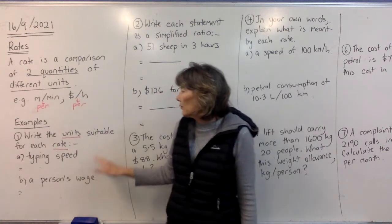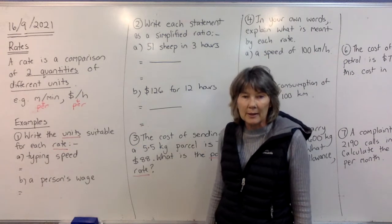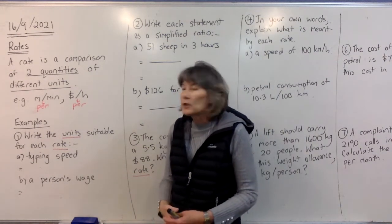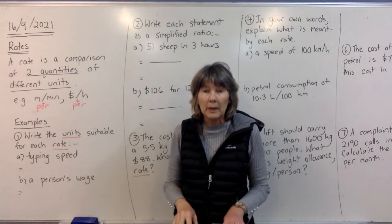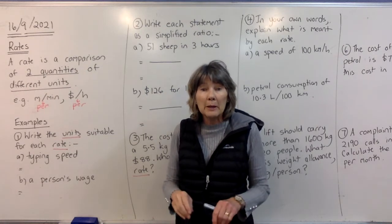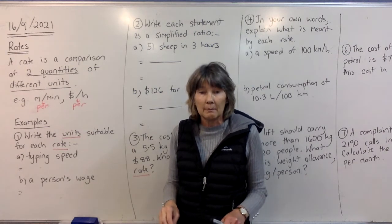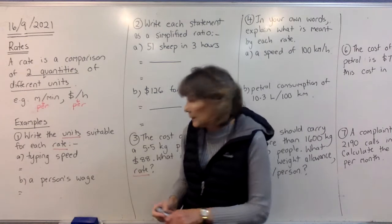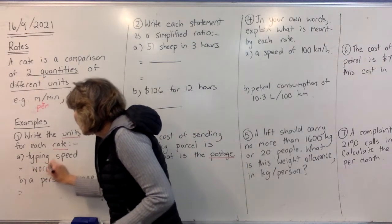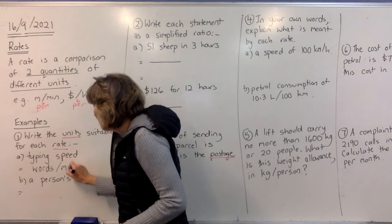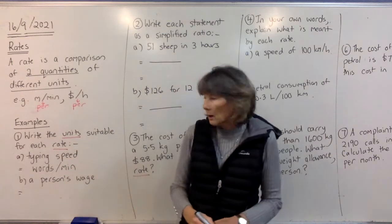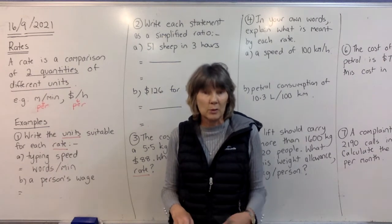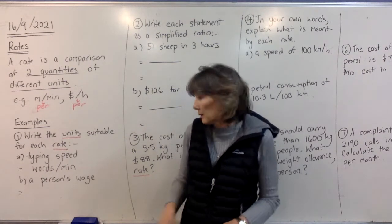All right, so in this first question, we're writing the units suitable for each rate. Now, this one's a little bit tricky, so I'm going to lead you through this. But a typing speed, how quickly you can type, is normally done in how many words you can type in one minute. So when we talk about how many words you can type in one minute, that would be measured in words per minute. So somebody who's got a really good typing speed would do 60 words per minute. That's one word per second. Pretty quick.